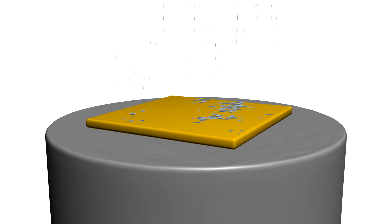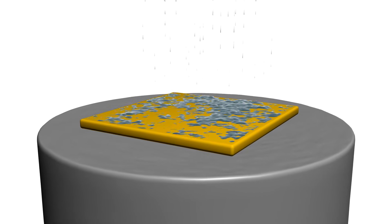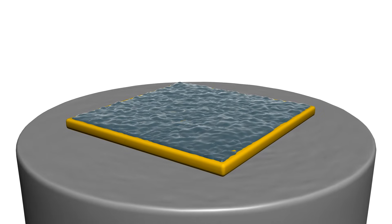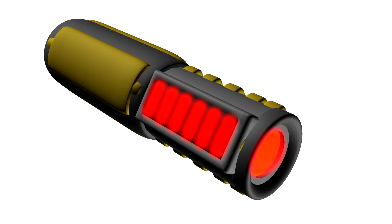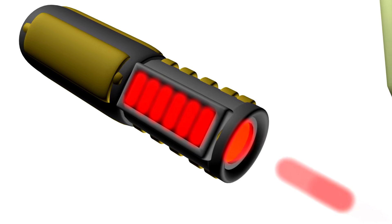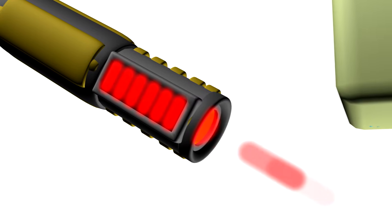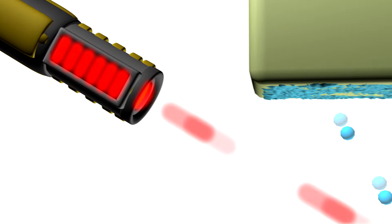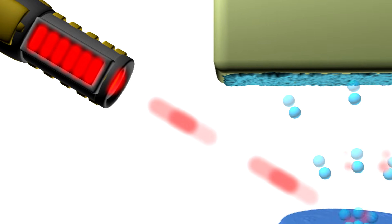Pulsed Laser Deposition is a physical vapor deposition technique that allows synthesizing thin films of a variety of materials. In Pulsed Laser Deposition, electromagnetic radiation from a high-intensity pulsed laser is used as an energy source to evaporate a solid or liquid starting material, which is called a target.